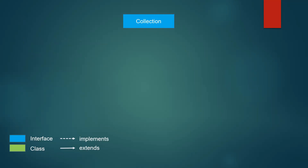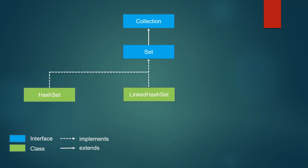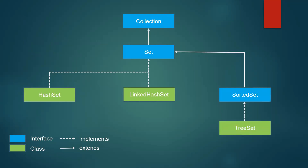Now let's see the hierarchy of the set interface. Set is also an interface extending the collection interface. There are two implementation classes: HashSet and LinkedHashSet. There is another interface, SortedSet, which extends the set interface, and TreeSet is the implementation class of SortedSet.